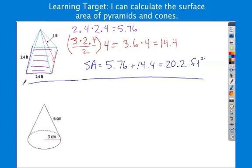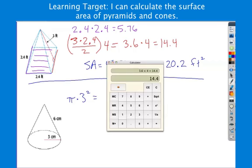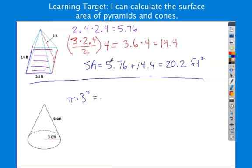Next, we have a cone. Which means we have to use our special formula here. Well, the base is easy, so let's start with the base. Base is pi r squared. It's pi times 3 squared. So 9 times pi equals 28.3. Let's round that to 28.3.